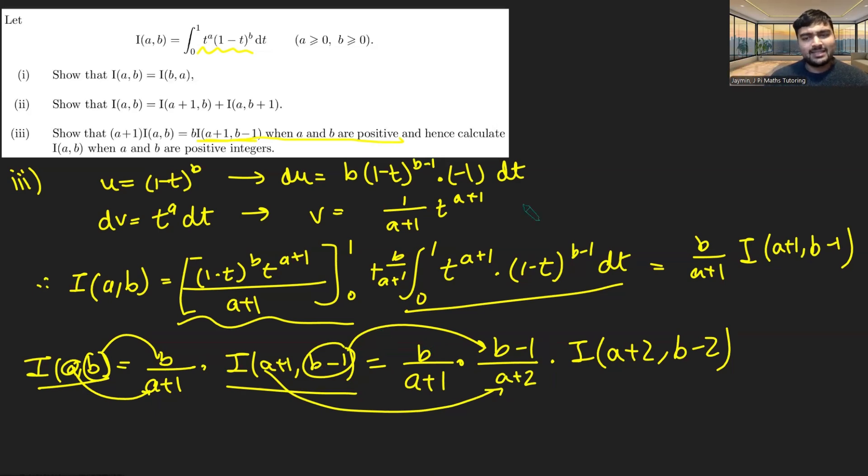But then we can just continue this inductively and get something like this. So this will be b, b-1 and so on all the way down to 1 on the top times a+1, a+2 all the way up to a+b multiplied by I(a+b,0).